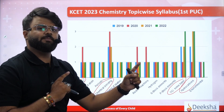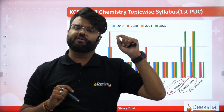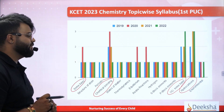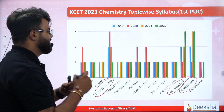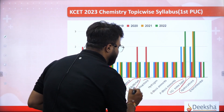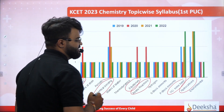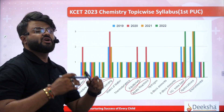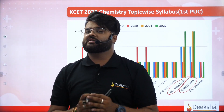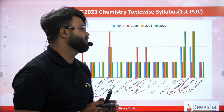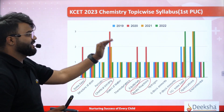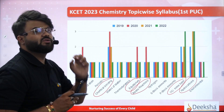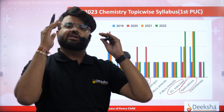The first chapter of chemistry — some basic concepts of chemistry — is equally important. Equilibrium and redox reactions are also important. This is the first PUC syllabus, with the most important chapters having the highest number of questions in the graph. This is equally important.